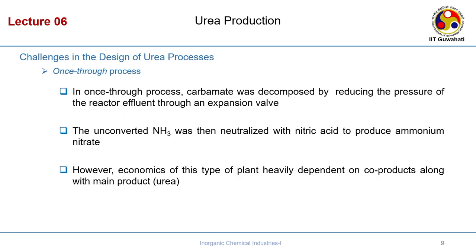In the once-through process, carbamate is decomposed by reducing the pressure. The effluents at 130 bar are reduced in steps — for example, 130 to 30 bar, then 30 to 10, then 10 to 1 bar — done slowly to minimize impurities and get a purer urea solution. An expansion valve is used, and unconverted ammonia can be neutralized by adding nitric acid, which reacts with ammonia to form ammonium nitrate — also a source of fertilizer.